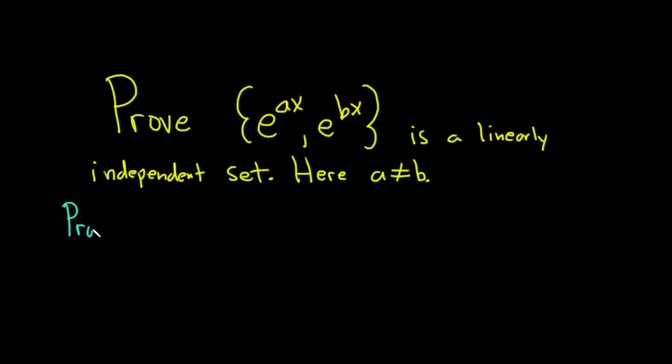We're going to give a direct proof to show that they are independent. So we're going to use the definition. So to use the definition we start by assuming that we have a linear combination of these functions and it's equal to zero. So suppose